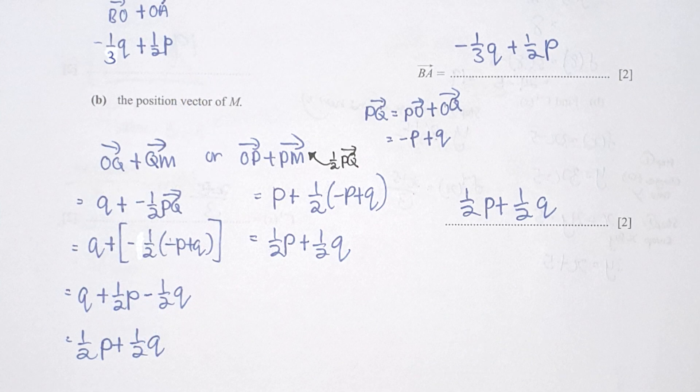Section B, find the position vector of M. So we have two options here. It's either OQ plus QM or OP plus PM. I did both the route. It's to show you you will get the same results. So your final result should be 1 over 2P plus 1 over 2Q. Both detailed solution has been attached over there.